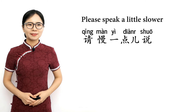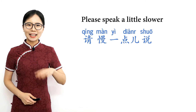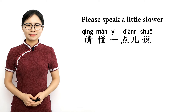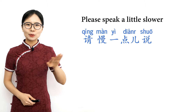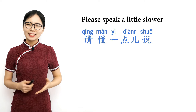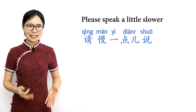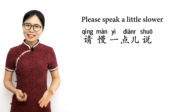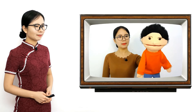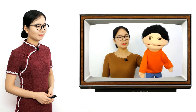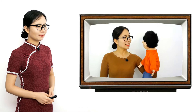Please repeat after me: 请慢一点说, 请慢一点说 — please speak a little slower. Let's see an example. 你好，你叫什么名字？你来自哪儿？ That was too fast. 请慢一点说 — please speak a little slower.